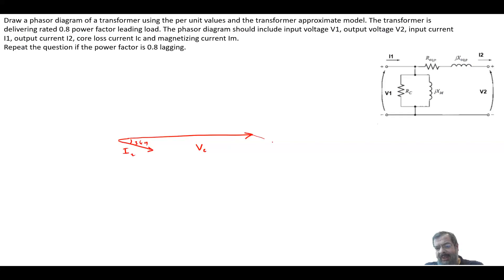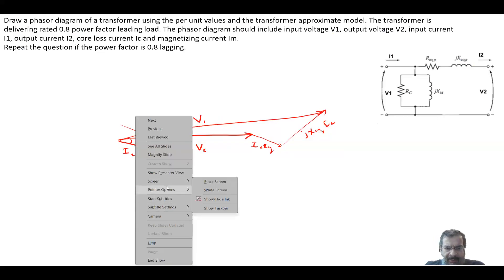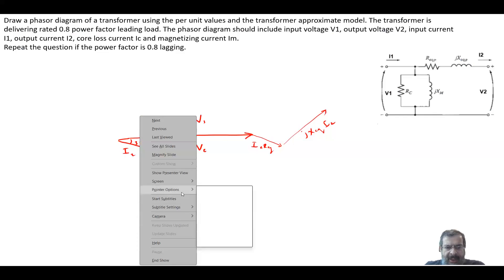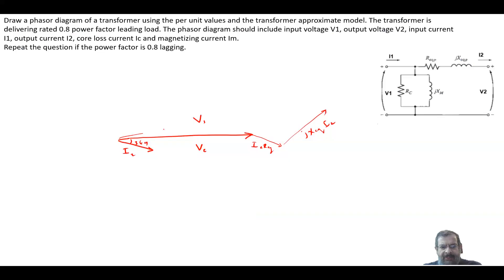We move I2 here and multiply by R-equivalent, so we have this vector, which is I2 R-equivalent. 90 degrees with this is j X-equivalent I2. We add these three vectors, then we get V1.